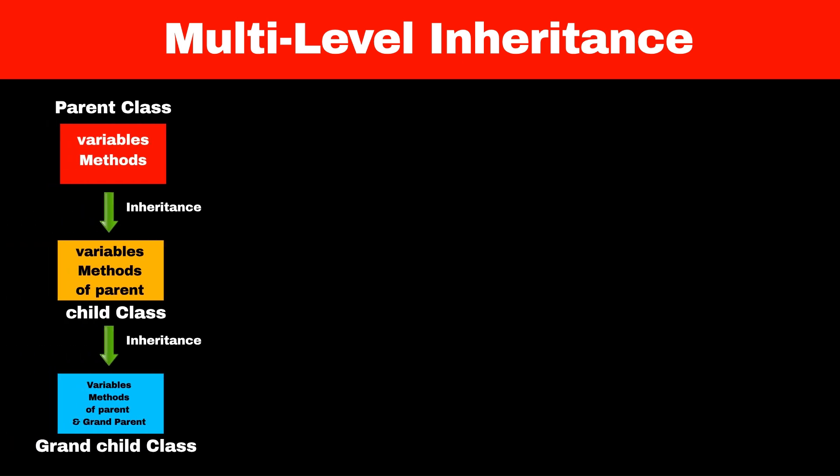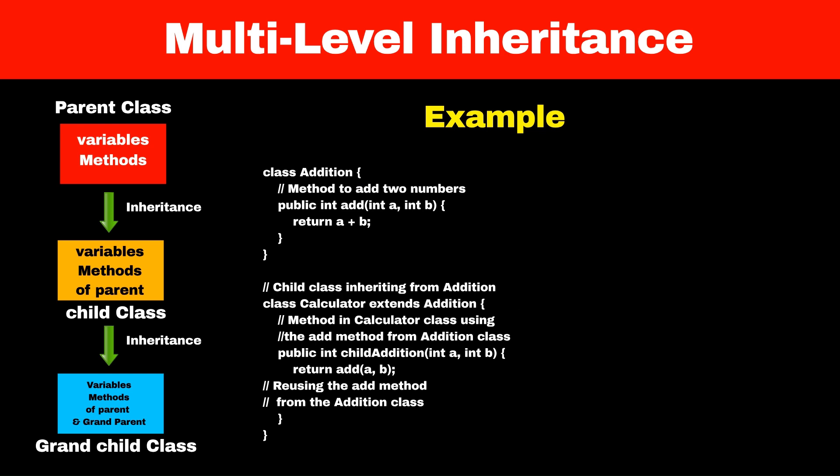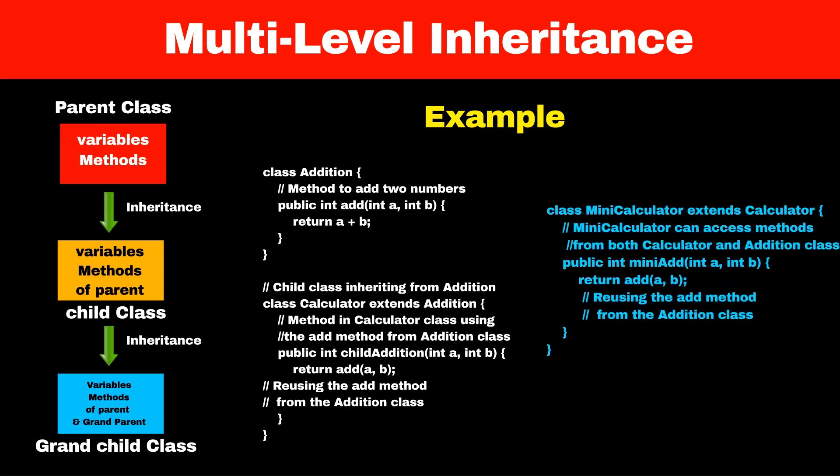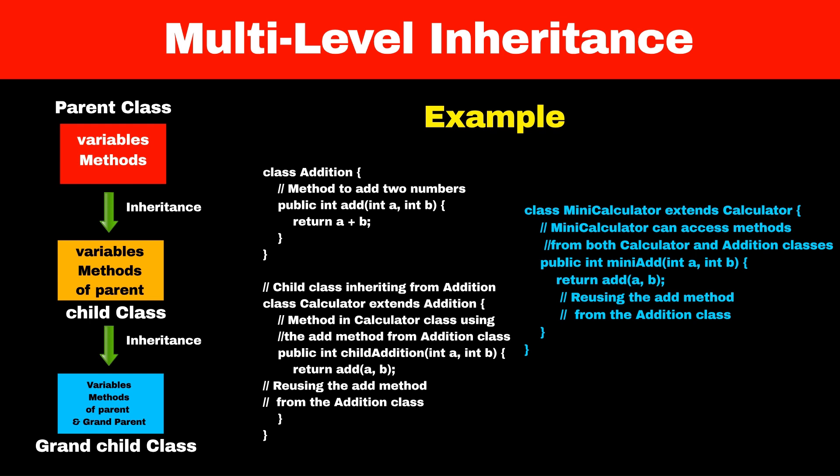The next type of inheritance is multilevel inheritance. As the name suggests, it has multiple levels of parent and child classes. One parent class can have one child class, and that child class can also have another child class, i.e., a grandchild class. The child class can access methods and variables of the parent class, and the grandchild class can access variables and methods of both the parent and grandparent class. To implement this we use the extends keyword followed by the name of the parent class. In our example, we created a parent class called addition and calculator as a child class. Now if we create a new class called MiniCalculator and extend it from the calculator class, since MiniCalculator is a grandchild of addition, it can access the add method of both the calculator and addition class.